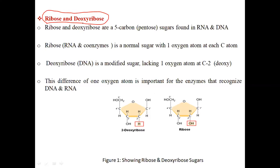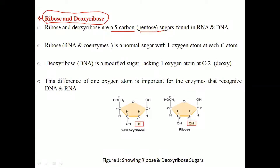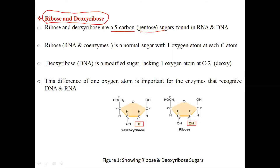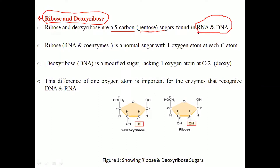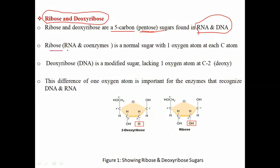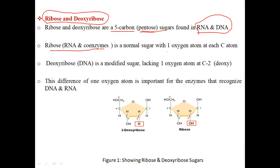First of all, we will discuss ribose and deoxyribose. These are very important monosaccharides. Ribose and deoxyribose are five-carbon compounds, which are also known as pentose sugars, as 'pentose' denotes five carbons. These are found in RNA and DNA, which are very important biomolecules. Ribose, which occurs in RNA and various coenzymes, is a normal sugar with one oxygen atom at each carbon atom.